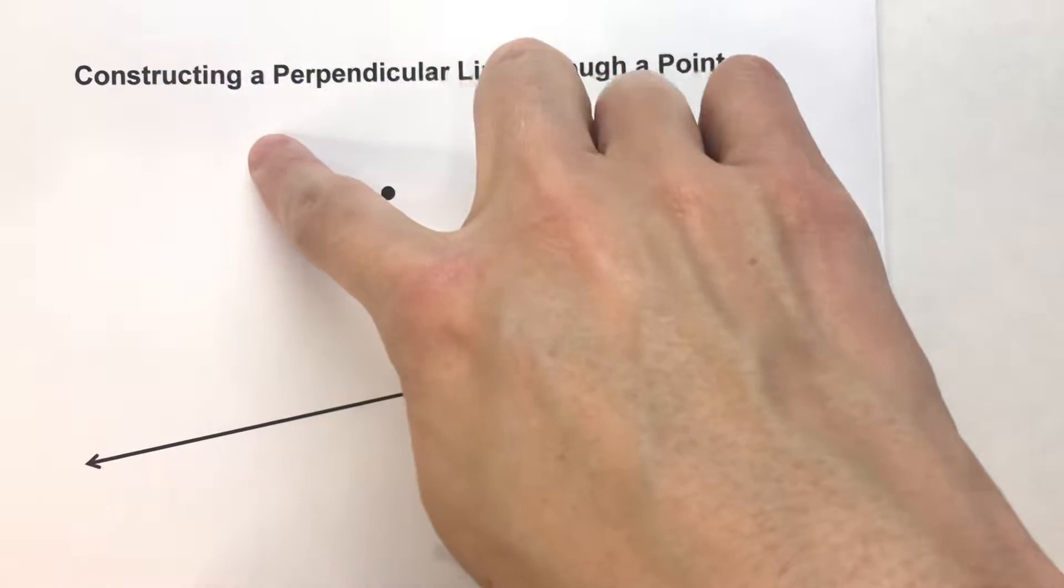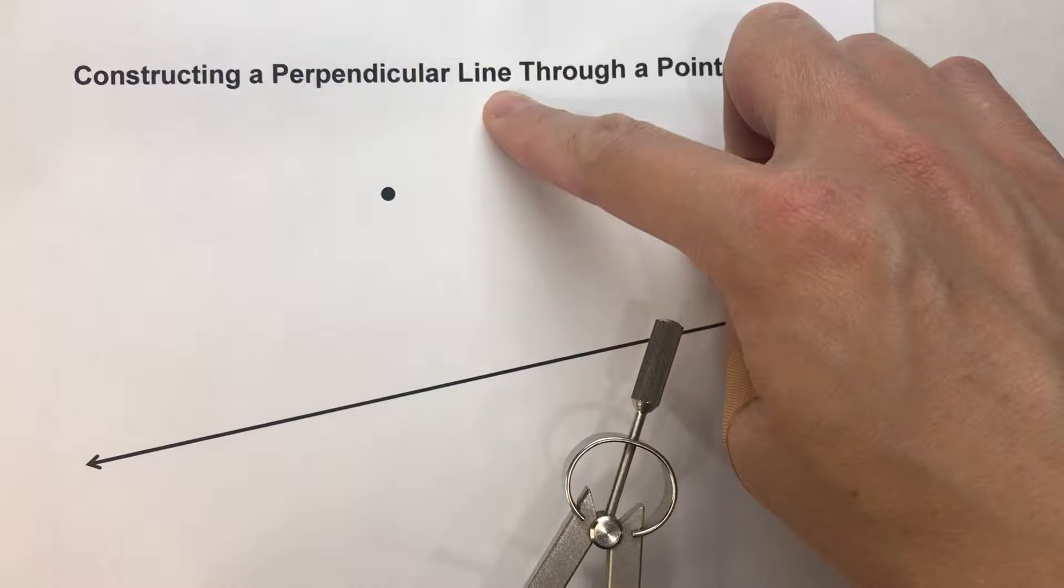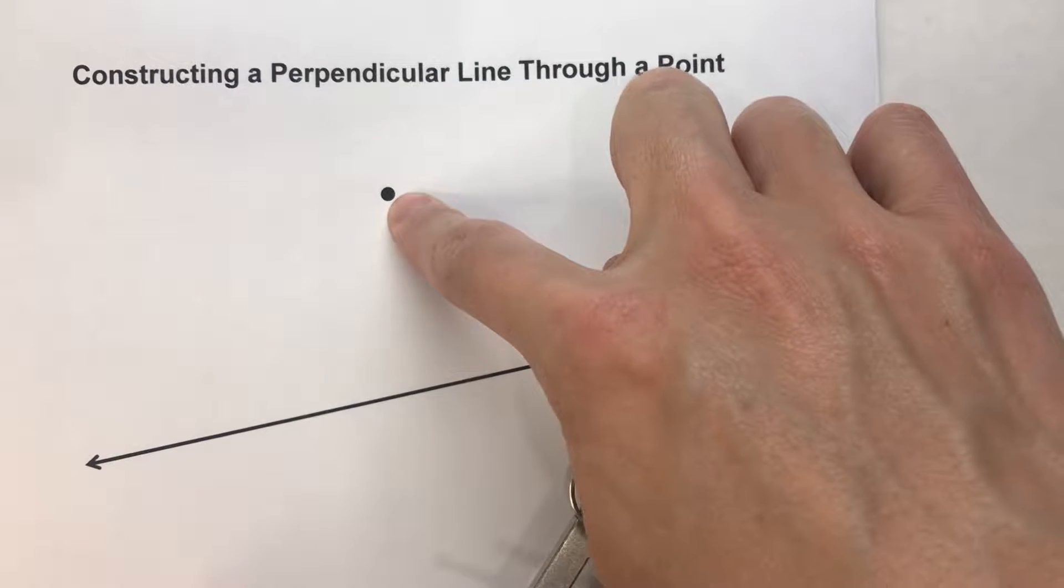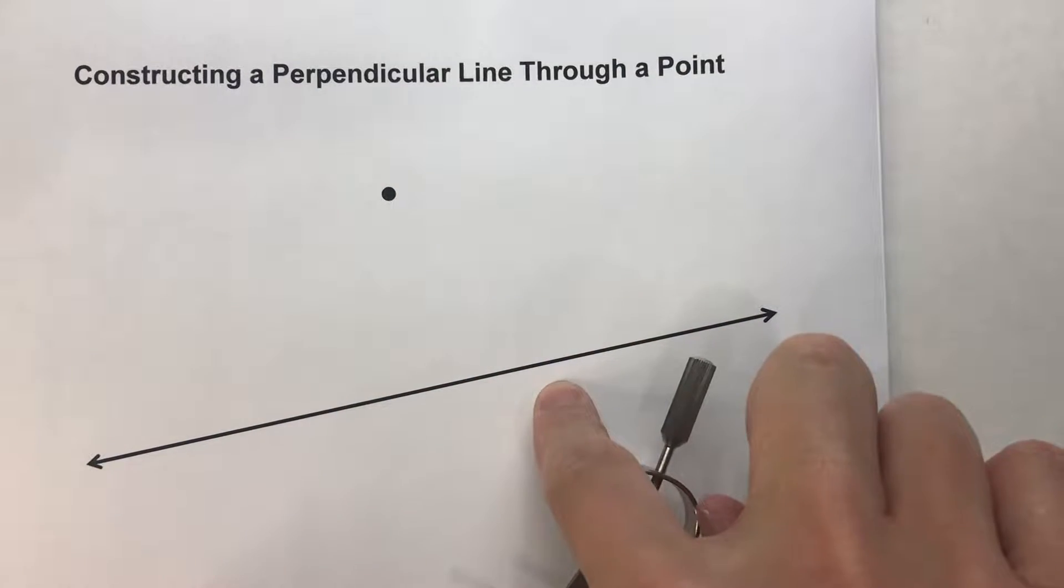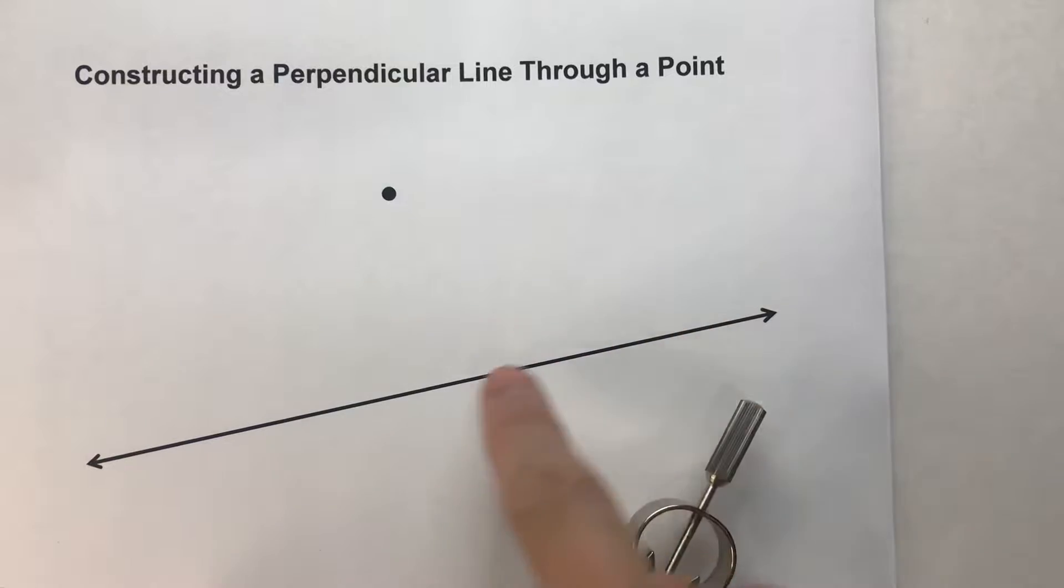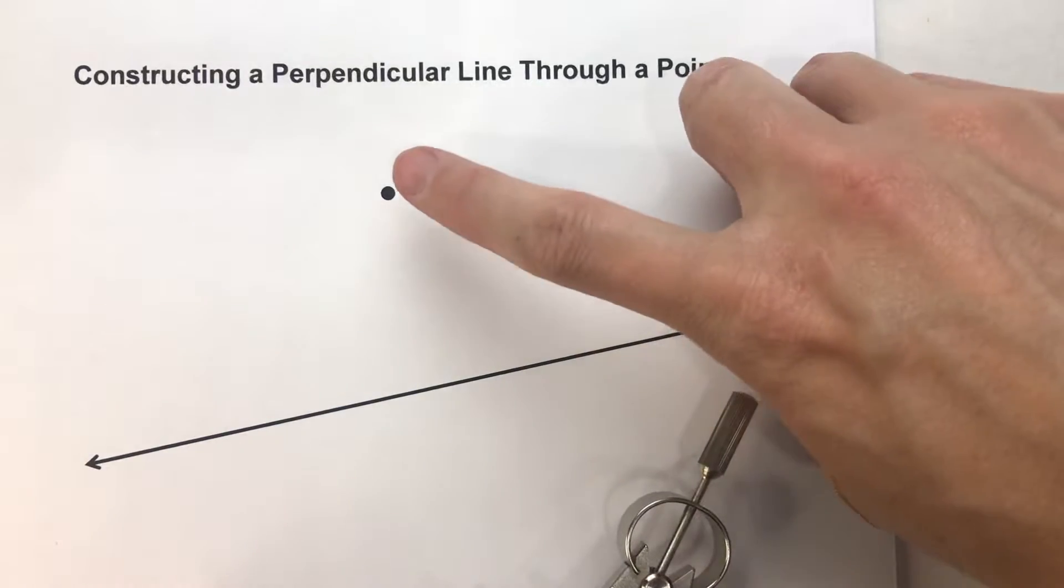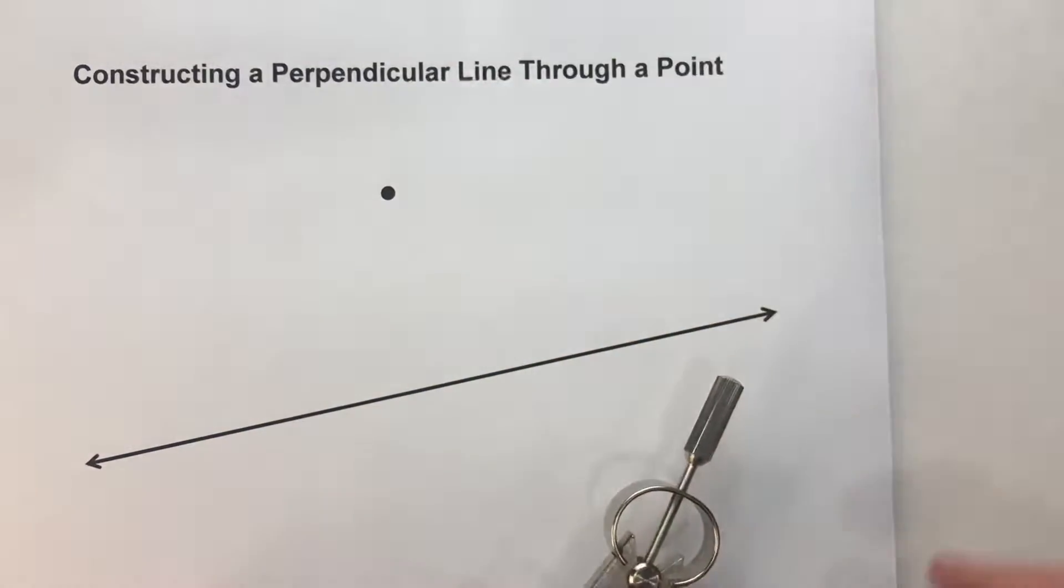So today, we are going to be constructing a perpendicular line through a point given a line. Notice we have a line here. We want a line perpendicular to this line, but we want it to go through this exact point.